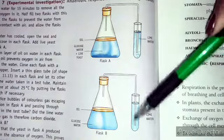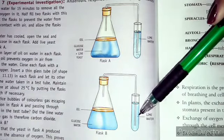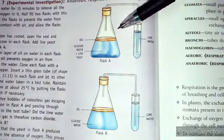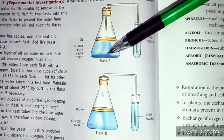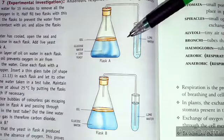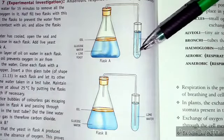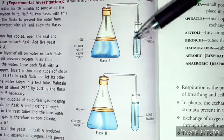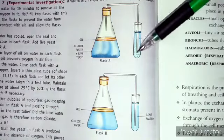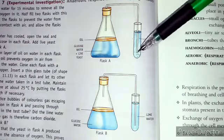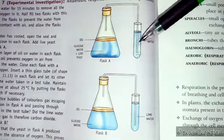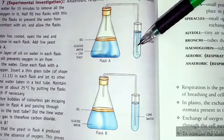In flask B with no yeast, there are no bubbles and no change can be seen. But in flask A, yeast is present so it respires — it breaks the glucose into carbon dioxide and ethanol, releasing some energy. Bubbles are produced and the lime water turns milky, showing the presence of carbon dioxide.